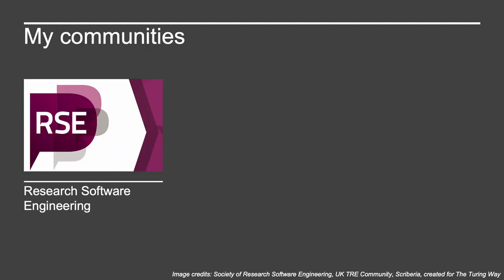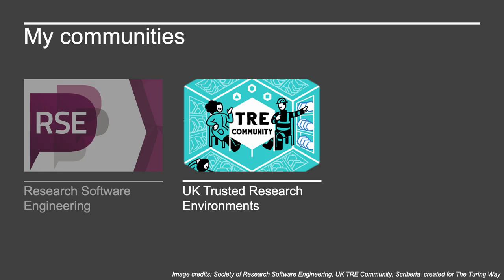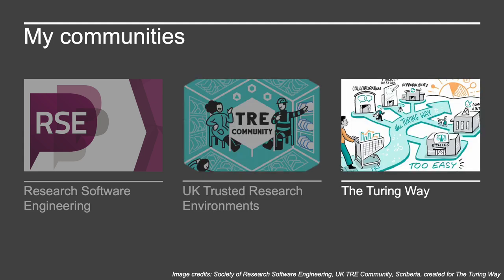The three communities I've chosen as exemplars are: the research software engineering community — a wide community for people doing research software engineering as part of their job, which has evolved into a professional society of which I'm a trustee. The second is the UK's Trusted Research Environment community, which brings together the builders, runners, and users of trusted research environments and all the information governance and policy work around that. The third is the Turing Way, an inclusive collaborative co-creation community to capture, curate and generate guidance on reproducible, ethical, collaborative data science. Both the UK TRE community and the Turing Way have workshops later this afternoon.